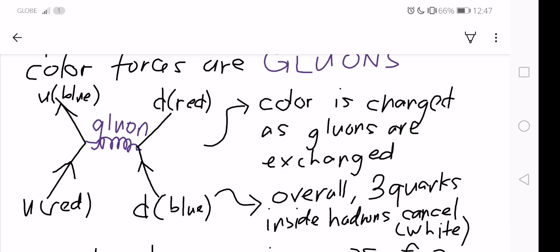As an example, here we have a Feynman diagram representing the gluon exchange between the up and down quark. As the color of the up quark, which is initially red, changes to blue, a color charge is exchanged as the gluons are exchanged.